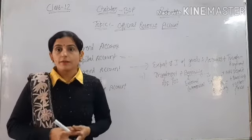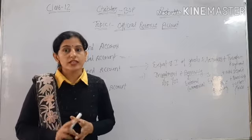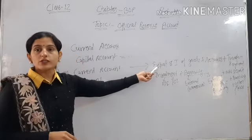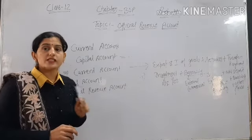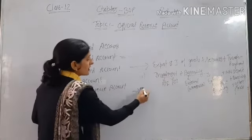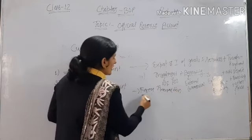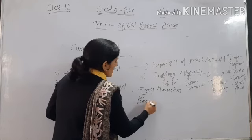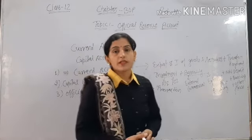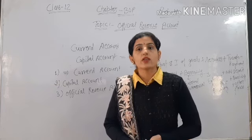So this is our BOP. We have completed the components of BOP topic. Components include three accounts: current, capital, and official reserve account. Watch the video and also read from your book. If you have any doubt or any query, you are free to ask. Thank you, students.